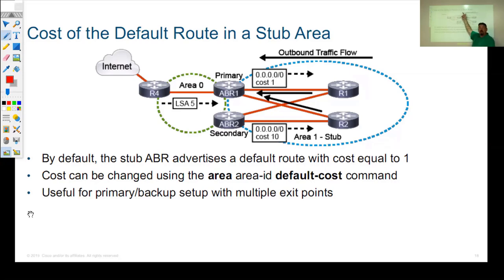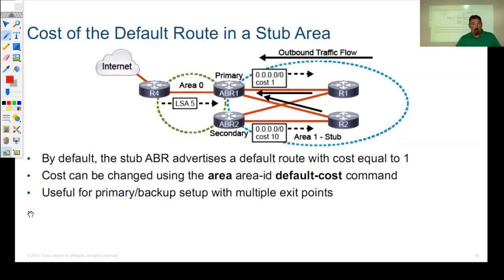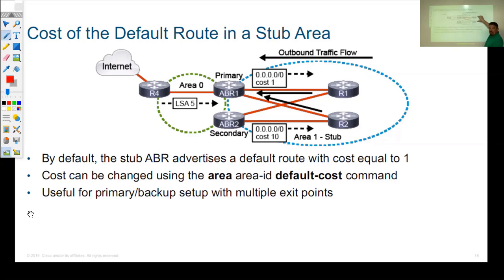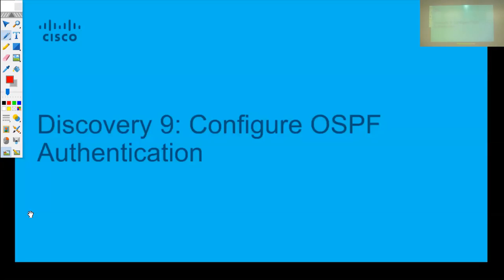We'll obviously choose the lowest cost path and use the primary ABR to get out. If the primary fails, the backup route through the secondary ABR takes over. We can also leave the costs equal, in which case it becomes more of a load-balancing scenario across both ABRs, where the routing decision is based on which ABR is physically closer — ABR1 or ABR2.